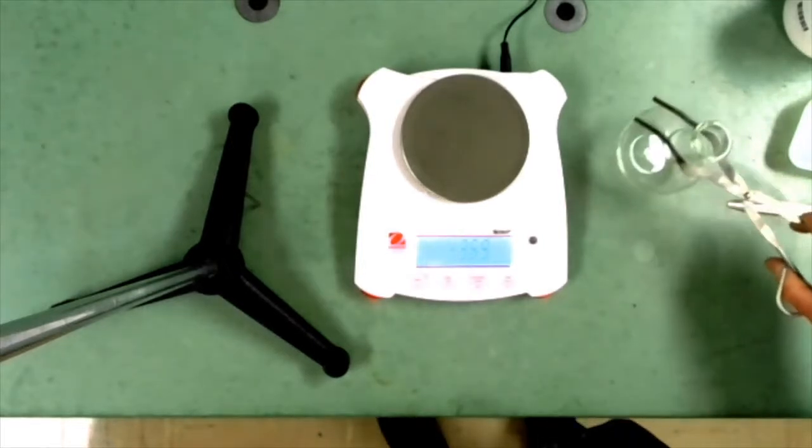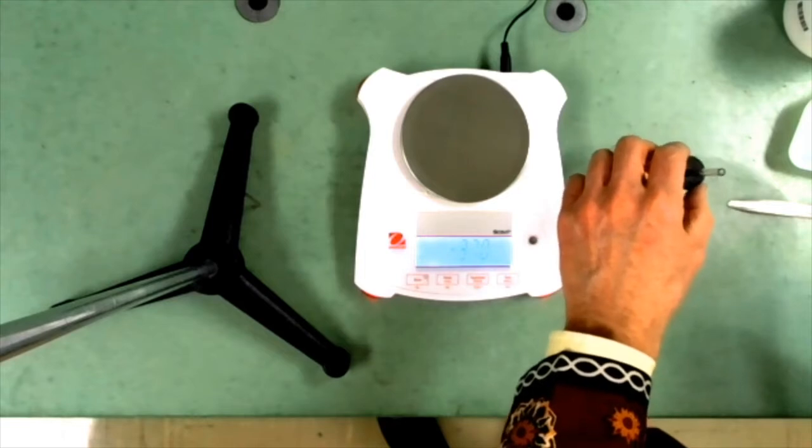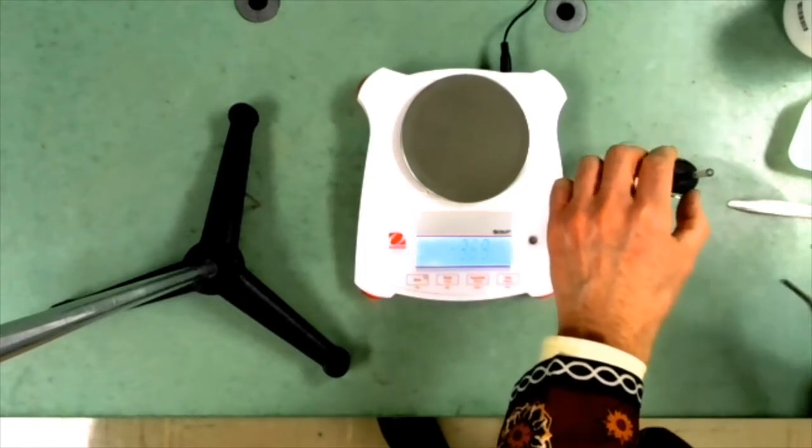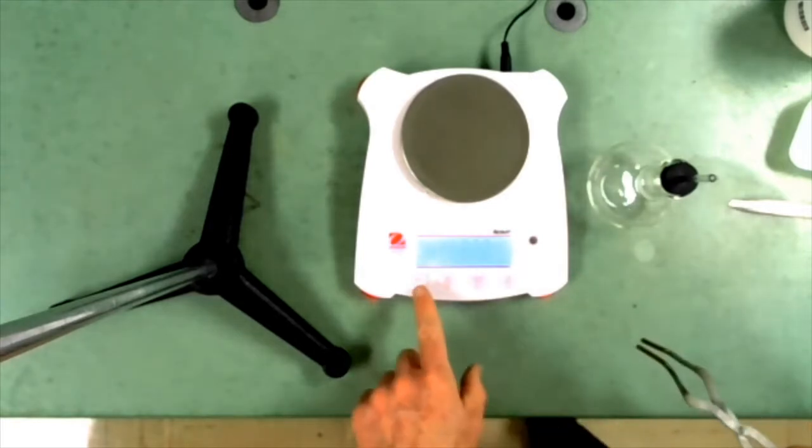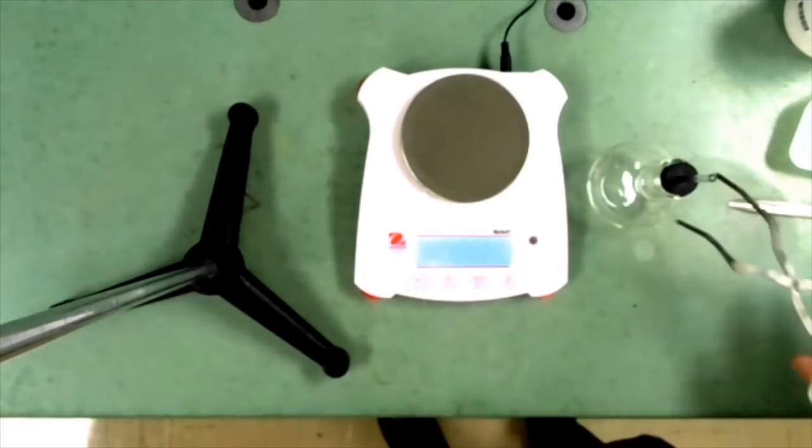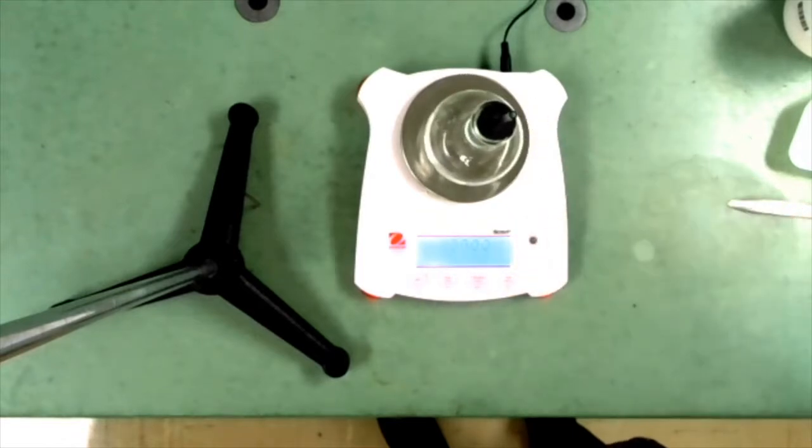Next, to weigh our receiving flask. I put the stopper in. There's no point putting it in tightly because we don't want it in tightly. I need to zero the balance. 127.93 grams.